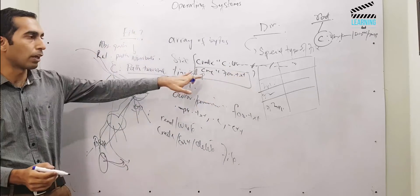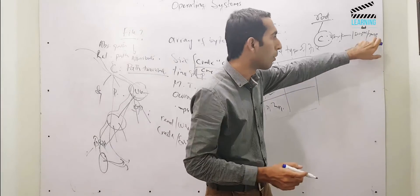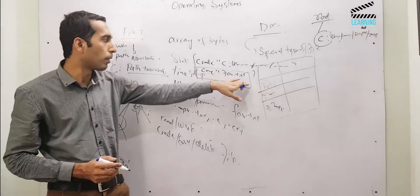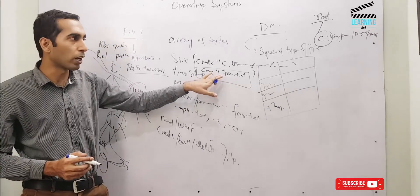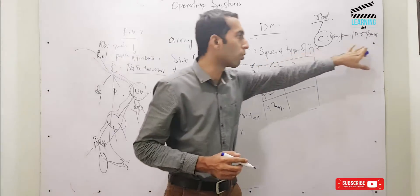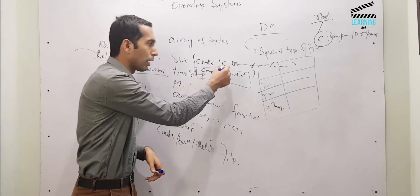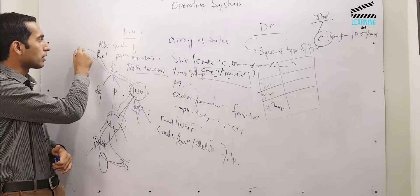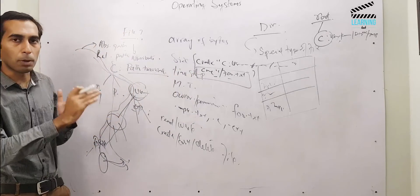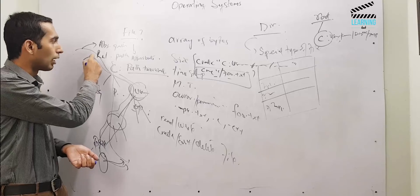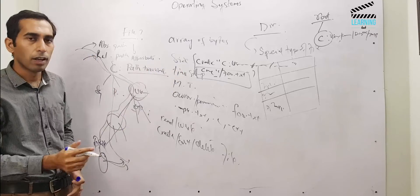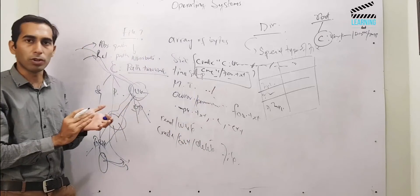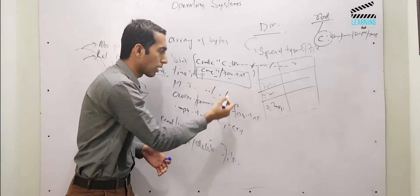For example, if our code is placed in the 'my files' folder, and we do not specify a path when creating a file, then by default that current location is used as the path. The system reads the current location and appends the filename there. So we have two options: absolute path, where we provide the complete path; and relative path, where we don't specify a path. In Unix, we can also access the root directly or go back a step in the directory structure.